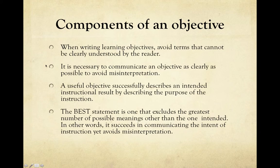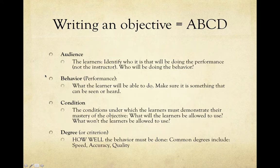Components of an objective — you guys can go through this slide. The components of an objective are four different things, very easy to remember: A, B, C, D. Audience, behavior, condition, degree.